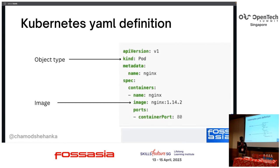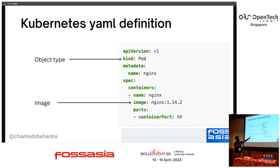This is a Kubernetes object YAML definition. First, we have to specify the kind. This example is a pod YAML definition. If it is a deployment, the kind value will be 'Deployment'. Most of the other parts will be the same. As you can see in the image, we can put the image name where the image is located. We can also specify the ports of the image. We can actually run more than one container in a single pod.